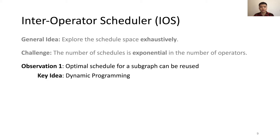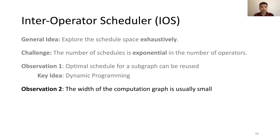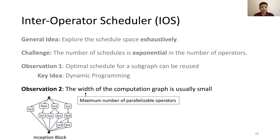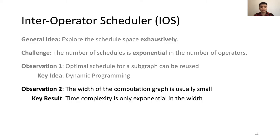However, the time complexity to schedule a general graph is still exponential in the number of vertices. When we consider the problem more deeply, we find that the width of the same computation graph is usually small — here, width means the maximum number of parallelizable operators in the model. Taking the Inception network as an example, the NASNet Inception block has six parallelizable operators, so the width of the Inception model is six. We prove that the time complexity of the iOS dynamic programming algorithm is only exponential in the width of the computation graph.